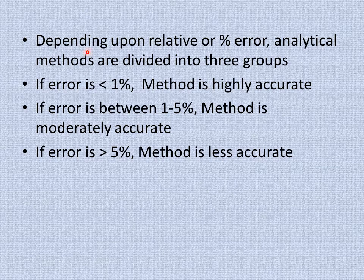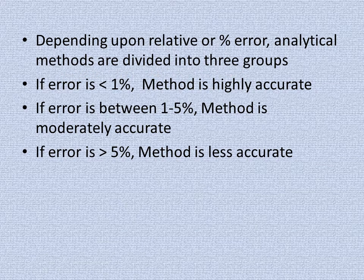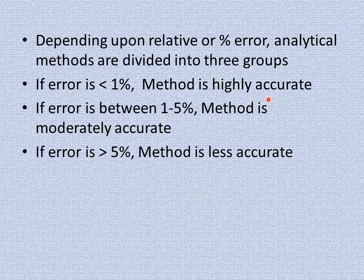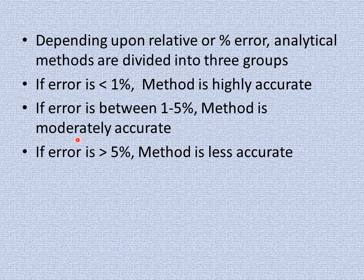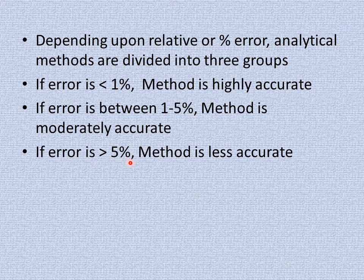Depending upon the relative or percentage error, analytical methods are divided into three groups. If the relative error is less than 1%, the method is considered highly accurate. If the error is between 1 to 5%, the method is moderately accurate. If the error is greater than 5%, the method is considered less accurate.